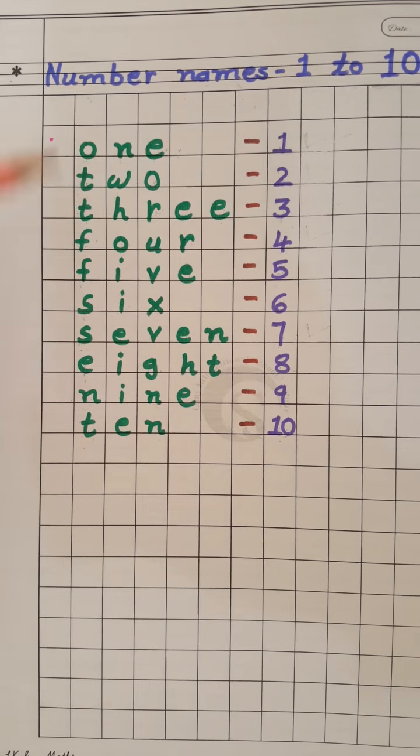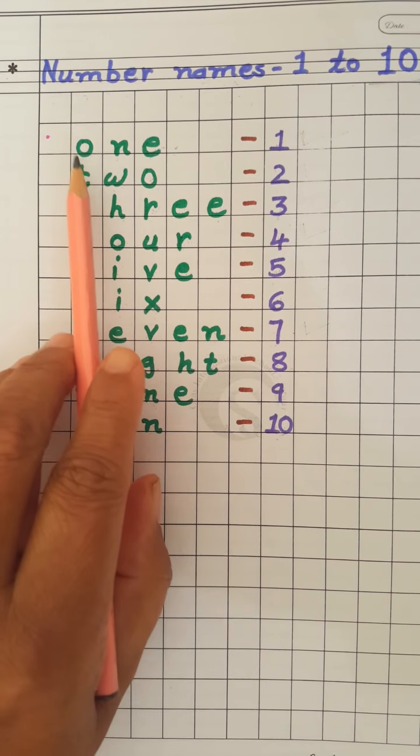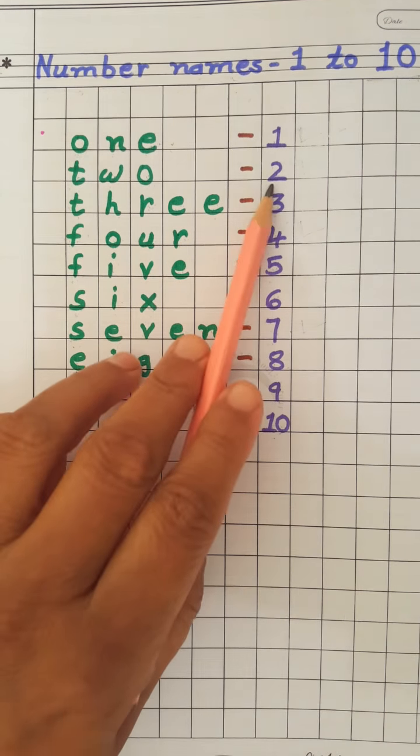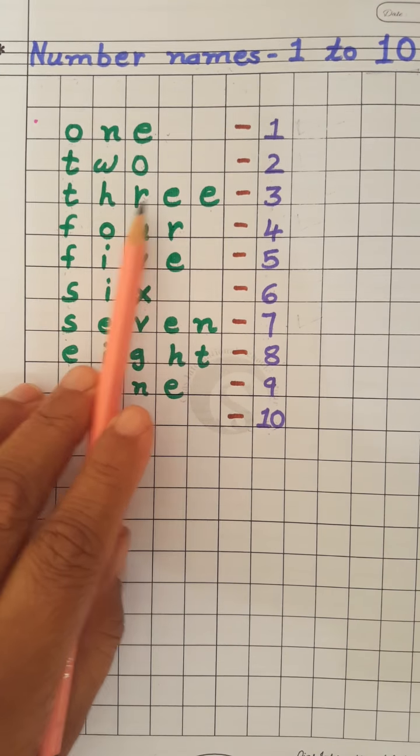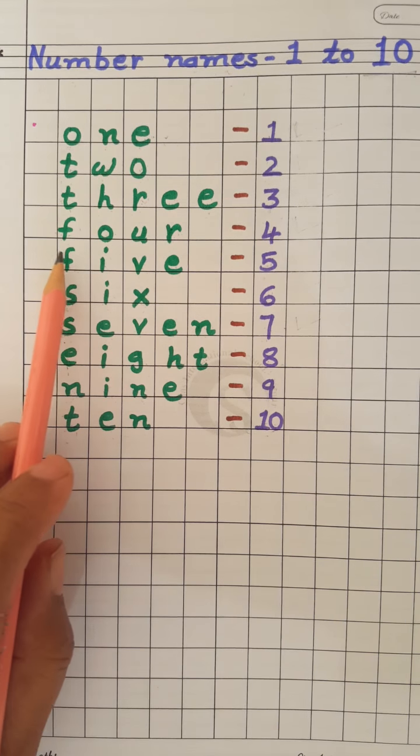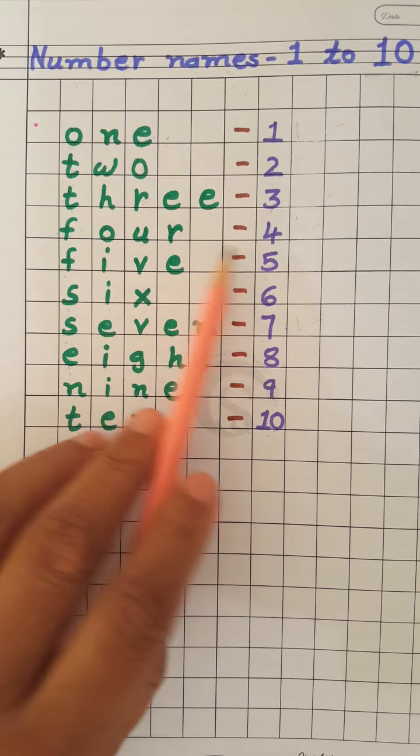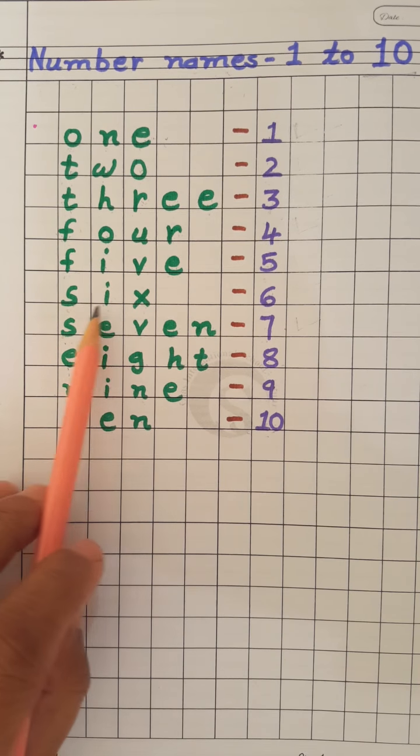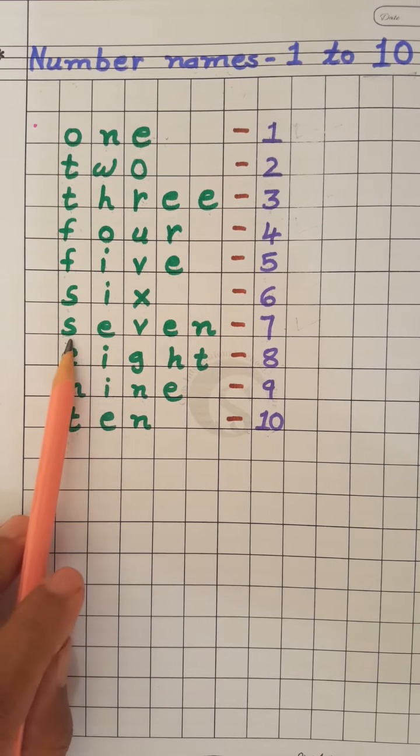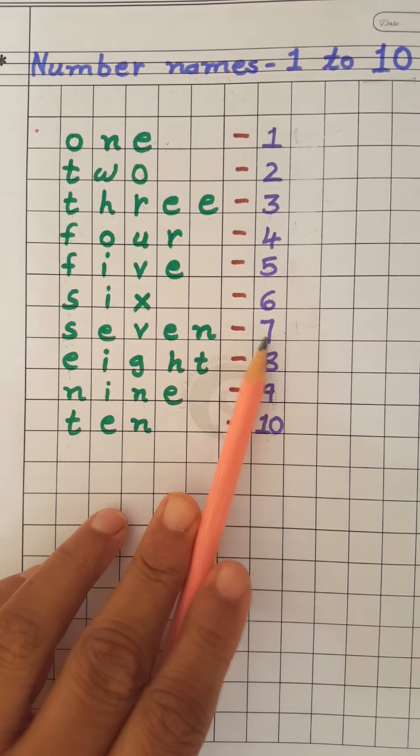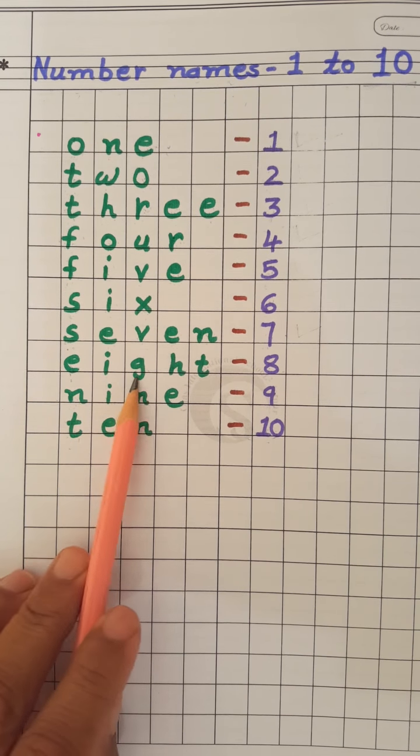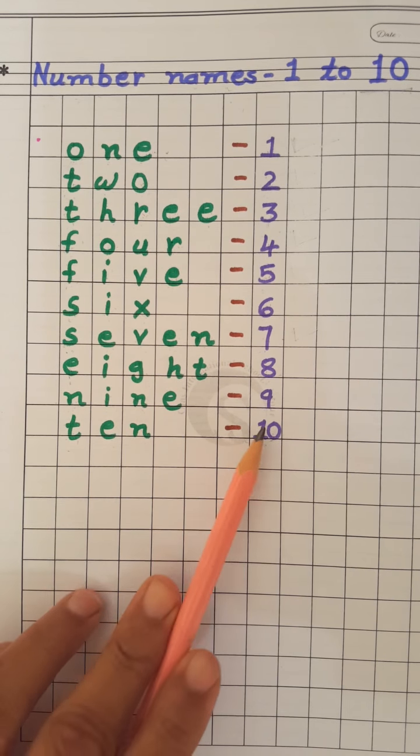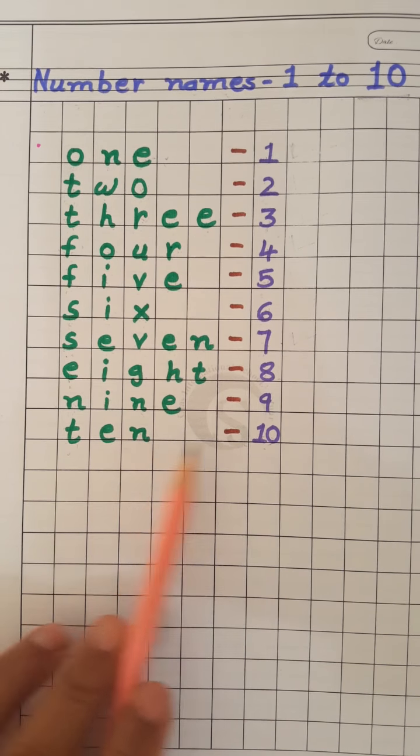So, let's revise with me. Speak with me children. O-N-E-1, T-W-O-2, T-H-R-E-E-3, F-O-U-R-4, F-I-V-E-5, S-I-X-6, S-E-V-E-N-7, E-I-G-H-T-8, N-I-N-E-9, T-E-N-10.